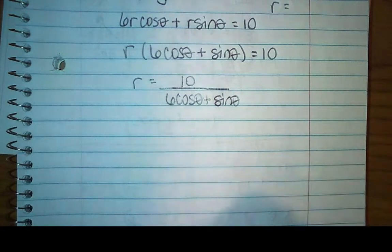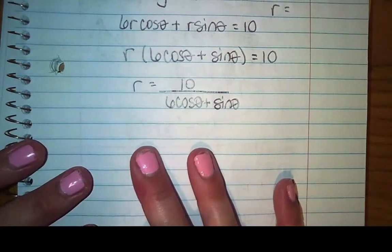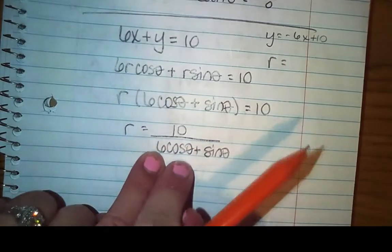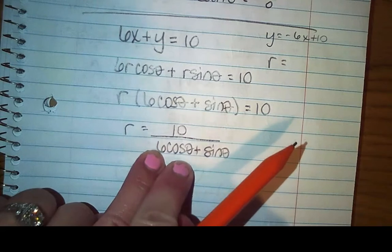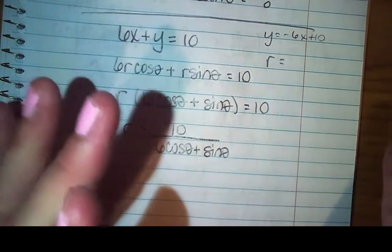Now I'm just one step away — divide both sides. So in polar coordinates, this would be r = 10 over (6 cosine θ + sine θ). And then you're done. It looks completely weird, but if you were to graph this in polar coordinates, you would get a line.